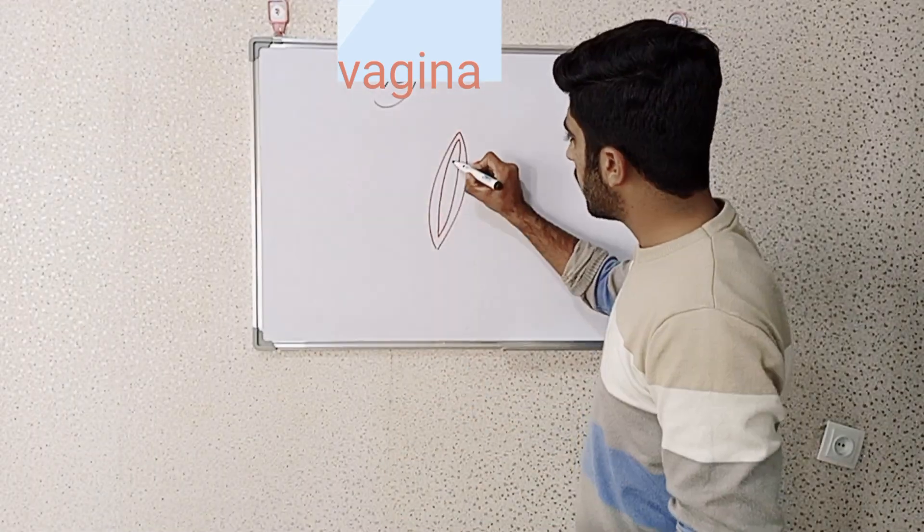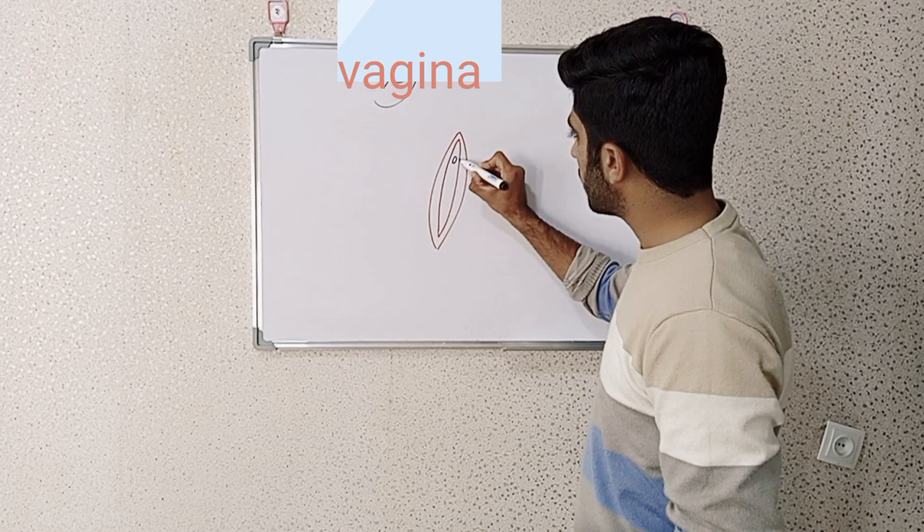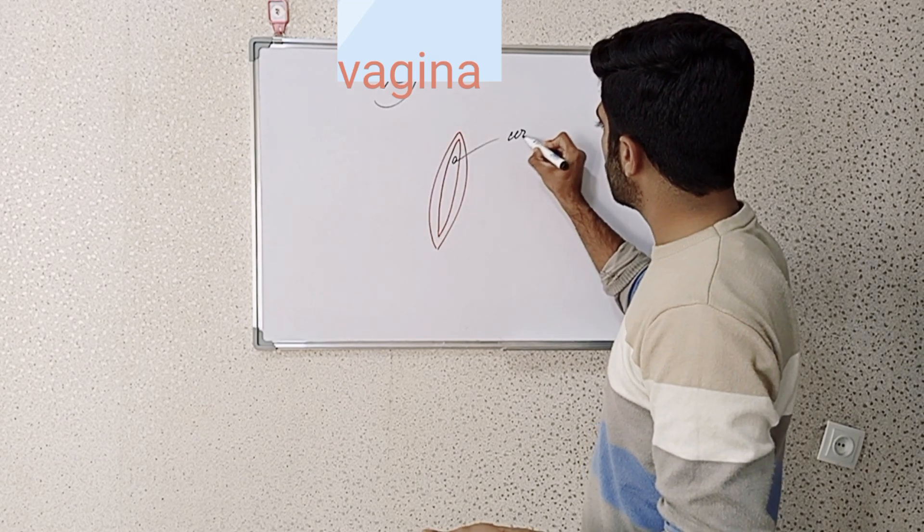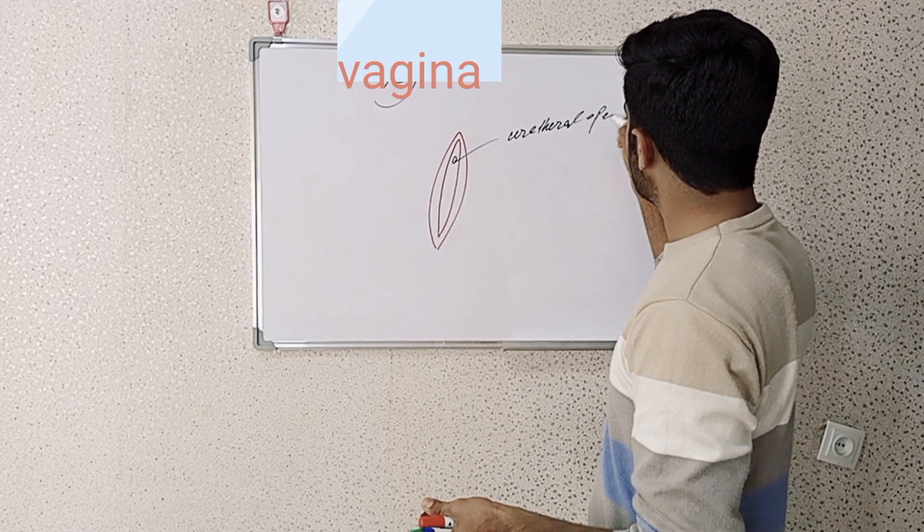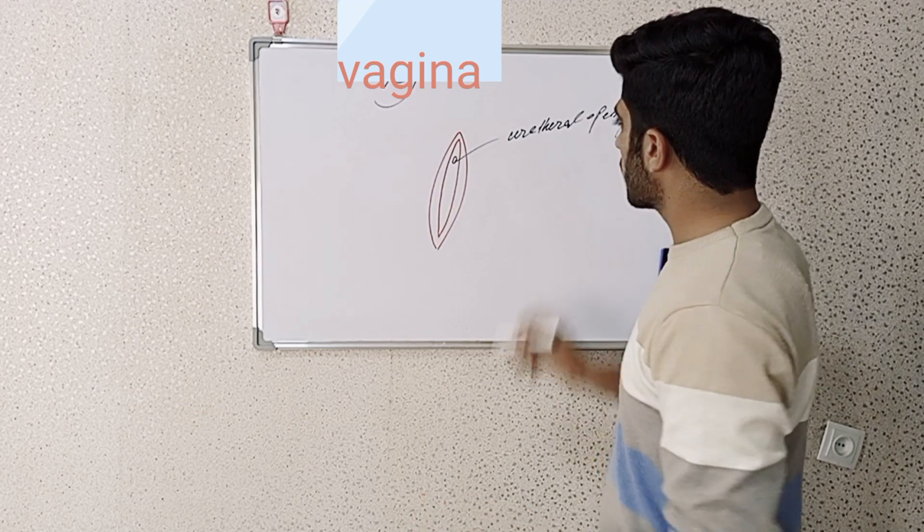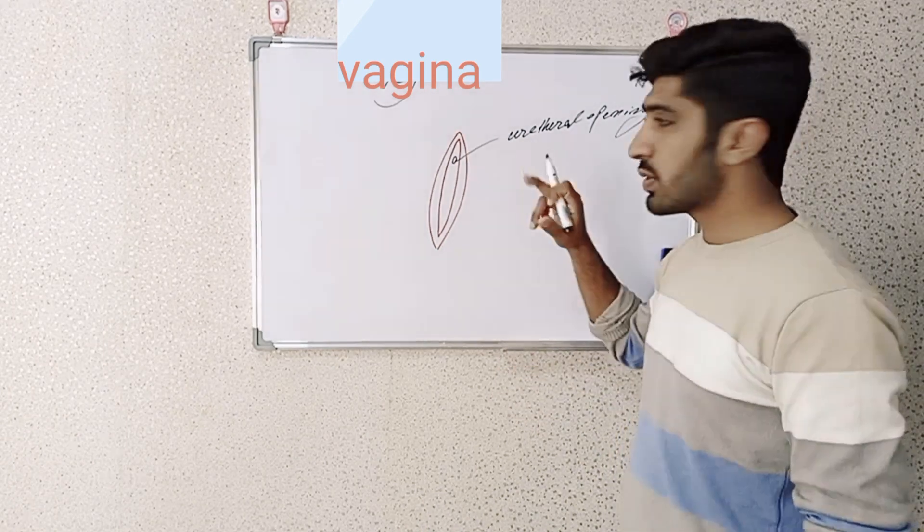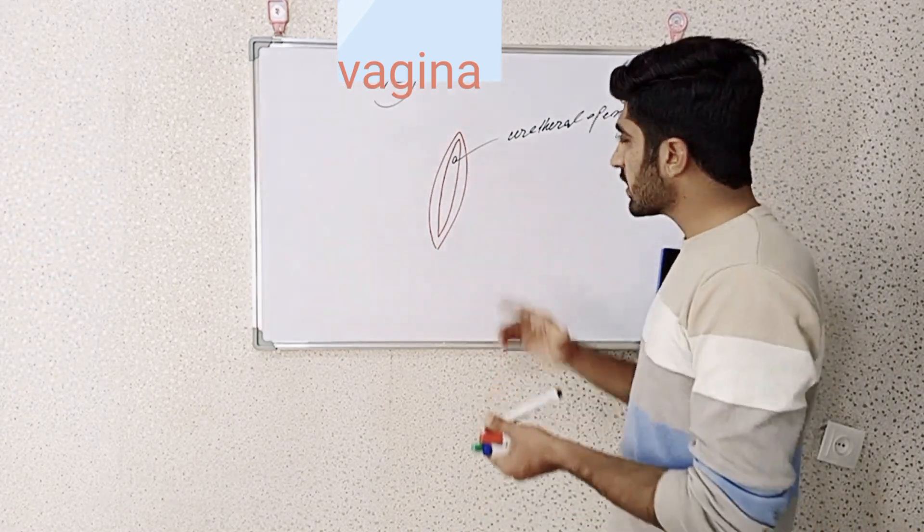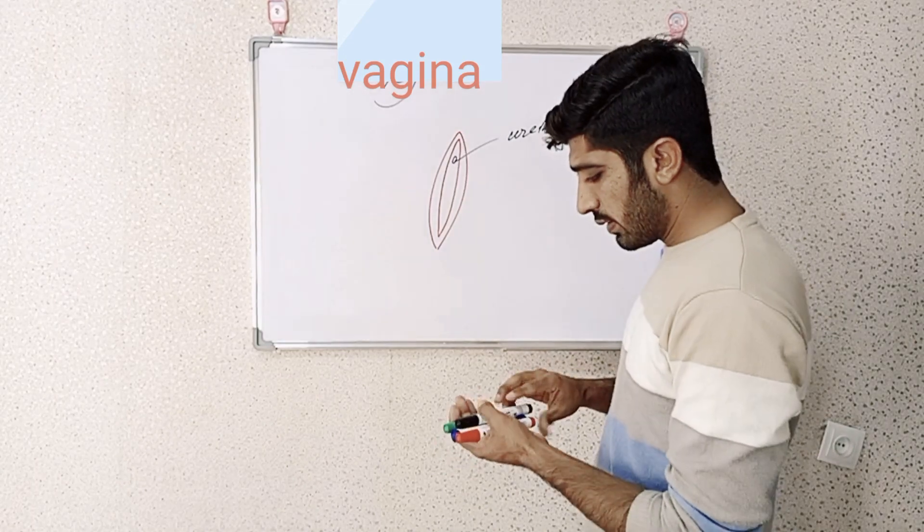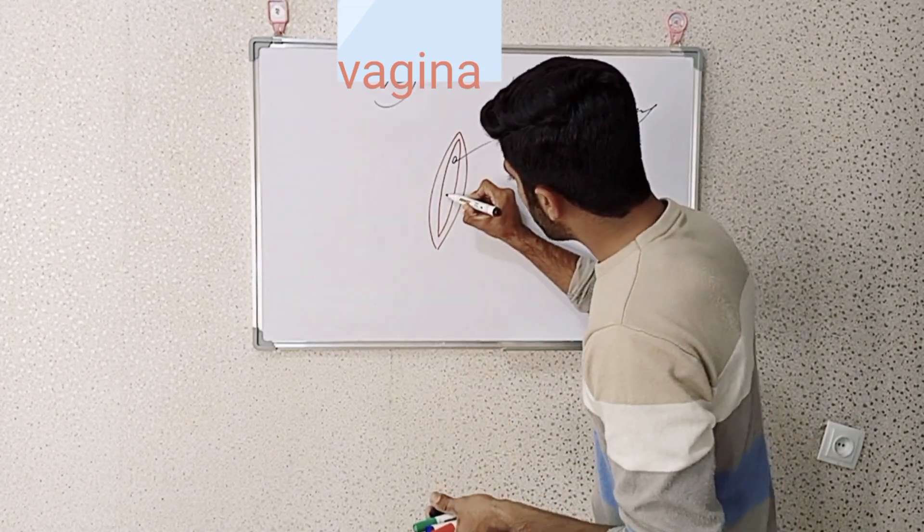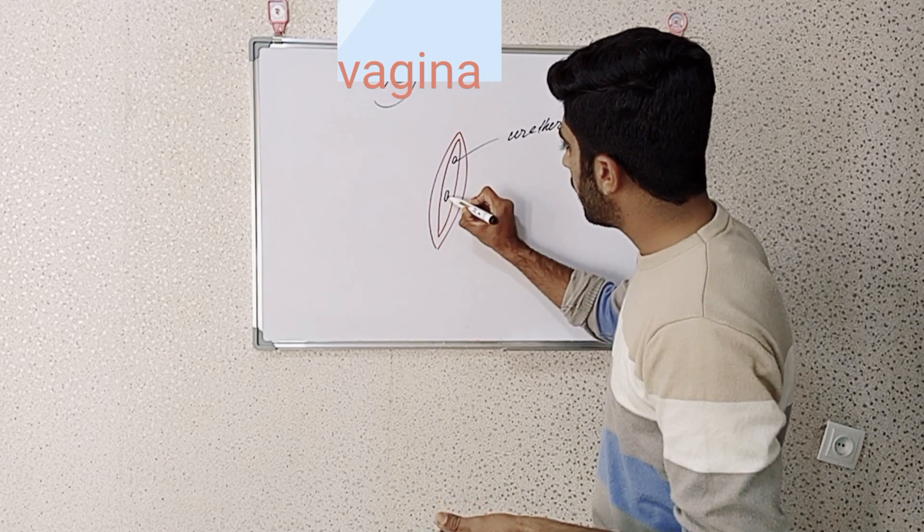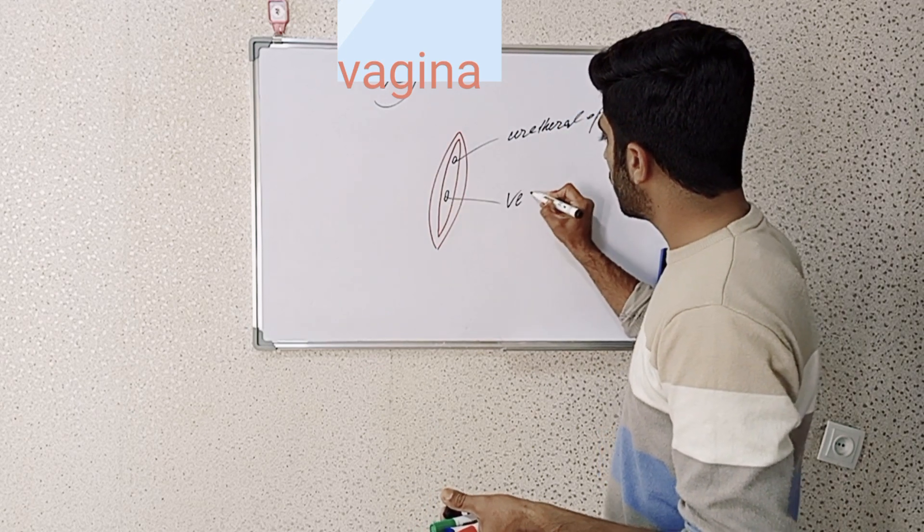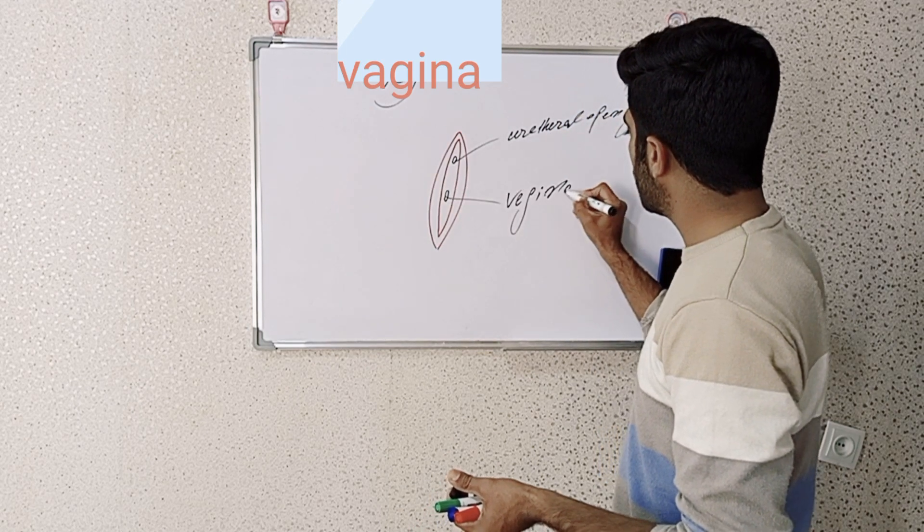There is a small opening present which is called the urethral opening, where the urethra comes out of the body. Just below the urethral opening, one more opening is present which is called the vaginal opening.